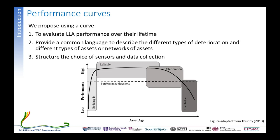The performance curve has performance on the y-axis ranging from low to high, with a threshold that can be broadly defined for different uses. On the x-axis we have asset age, or any measure of time or degradation. The curve itself is what we call the upturned bathtub model, split into four distinct stages: an initial bedding-in stage where performance increases, a main reliable phase above the performance threshold, a third stage where deterioration and reducing performance occur, and finally unreliable behavior below the threshold.